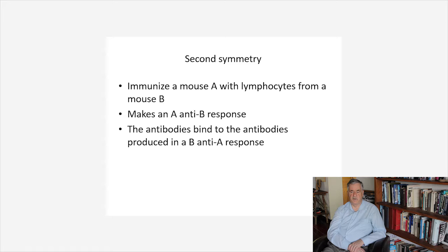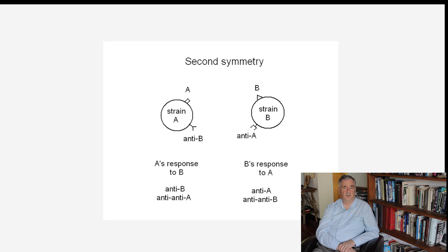So in other words, the A-anti-B response is anti a B-anti-A response. This was initially understood in the context of the responses being not only to the antigens, the foreign antigens in each case, but also a response to the receptors on the lymphocytes being used in the immunization. So the A's response to B was anti-B and anti-anti-A, while B's response to A is anti-A and anti-anti-B. And you can see immediately that these two responses in each of the two mice are complementary to the two responses in the other mouse.